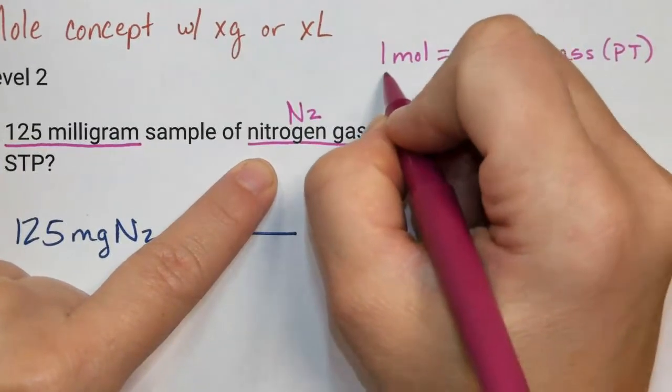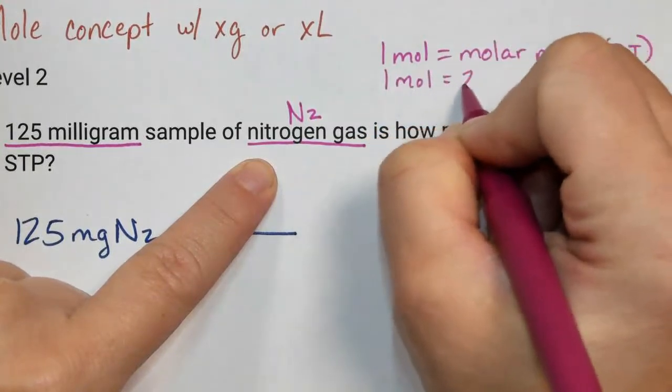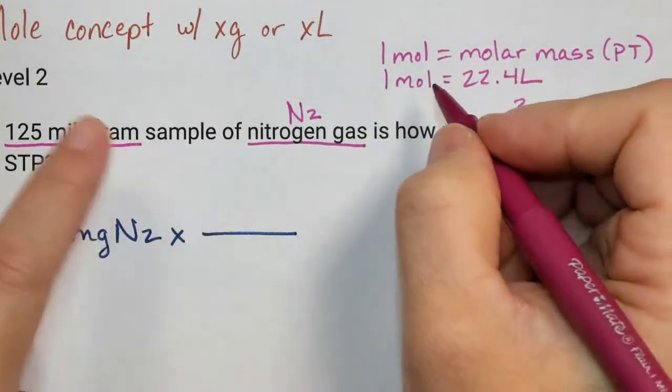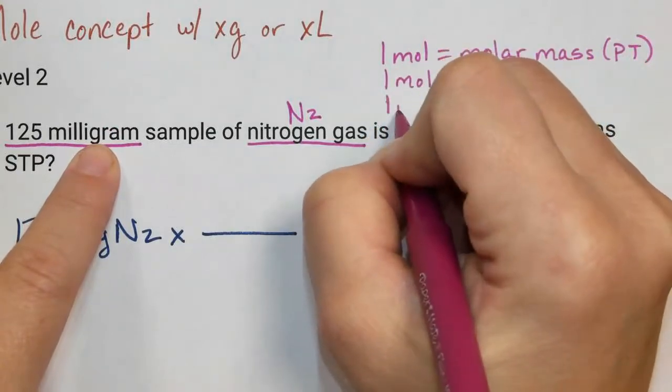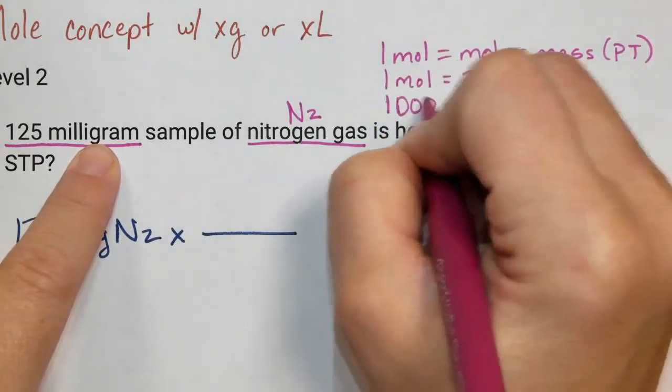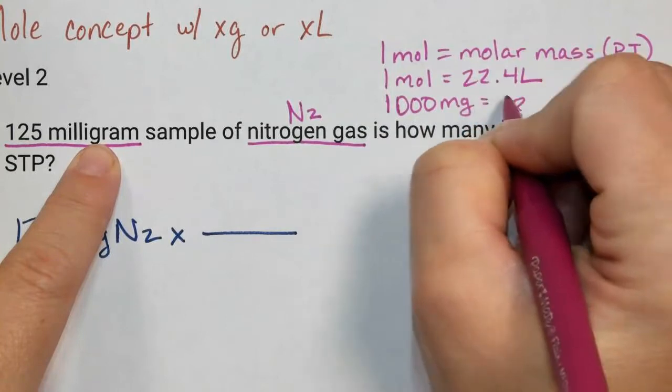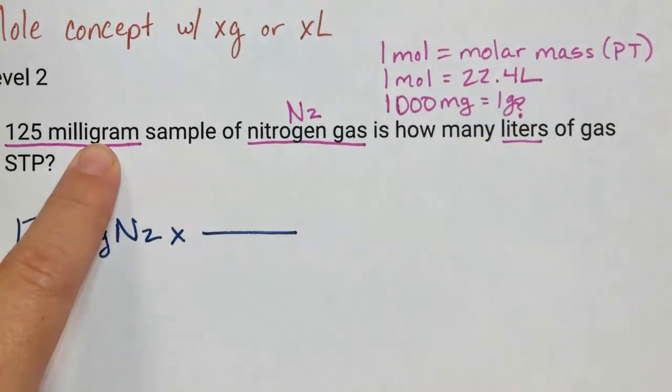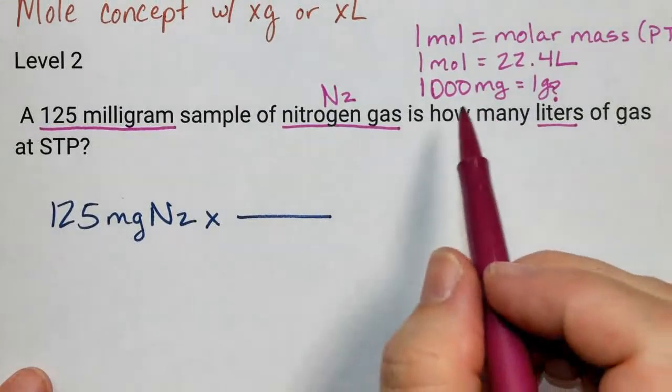I also know that one mole is equal to 22.4 liters. And finally, I know that 1,000 milligrams is equal to one gram. So we'll keep that in mind as we work out this problem.